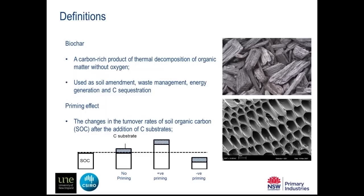Another term we'll use very often today is the priming effect. The priming effect is defined as the change in the turnover rates of soil organic carbon after you apply some substrates — in this case carbon, though nitrogen can also introduce priming. Today we focus on carbon priming. As you can see in this diagram, the white bar is soil organic carbon. If soil organic carbon doesn't change after adding a substrate, there's no priming. If turnover increases, producing more CO2, that's positive priming. If turnover decreases, that's negative priming.